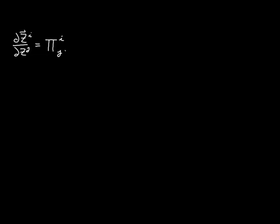I'm going to form a contraction with our contravariant basis vector this time. Just like before, we've got nine expressions, one term on the left, but three terms on the right, because I'm decomposing each of these nine vectors into linear combinations on the right-hand side.